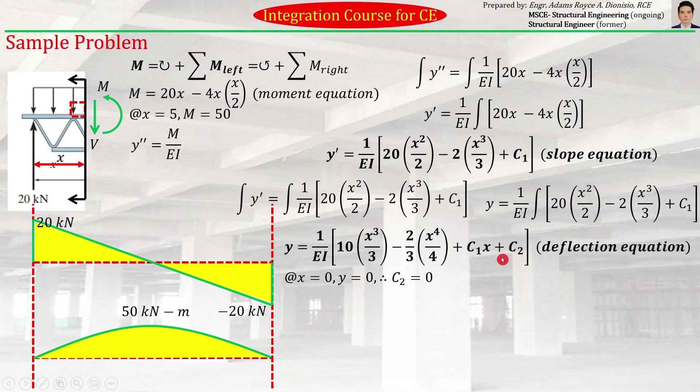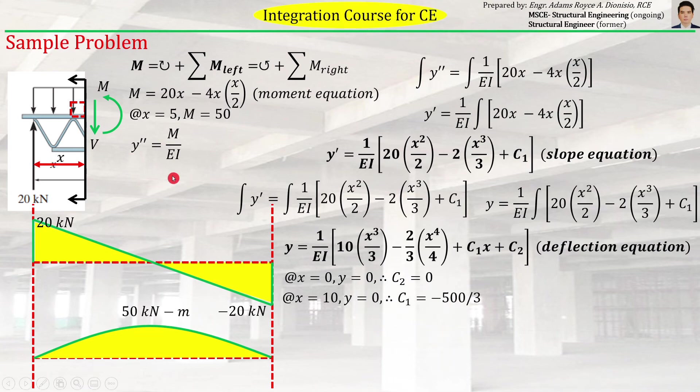Supposedly we can readily use these two equations once we know the values of the constants of integration. That's the goal—to determine the constants of integration. To compute for the constants of integration, we can just use the boundary conditions. What are the boundary conditions? We know that at x = 0, at this position, the deflection is equal to zero as well. Substituting that into the deflection equation—substitute zero in place of x, and also y = 0—you can find the value of C2, which is equal to zero.